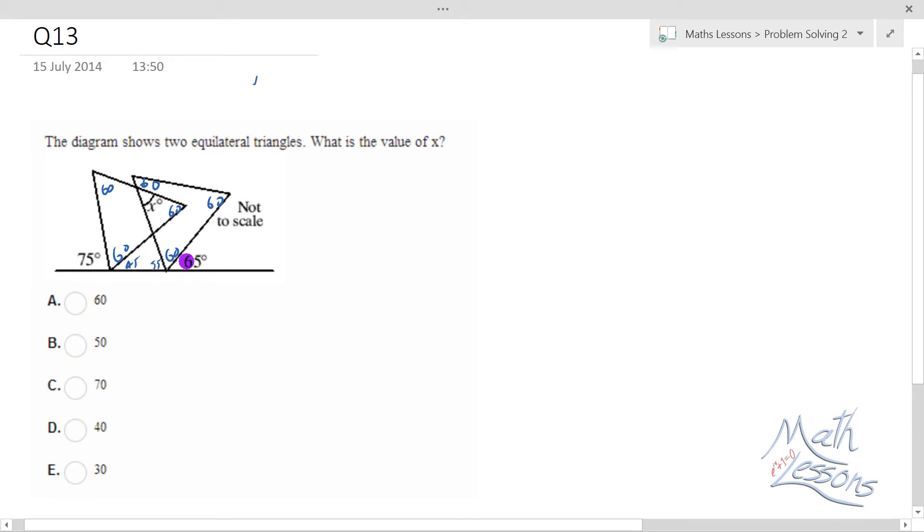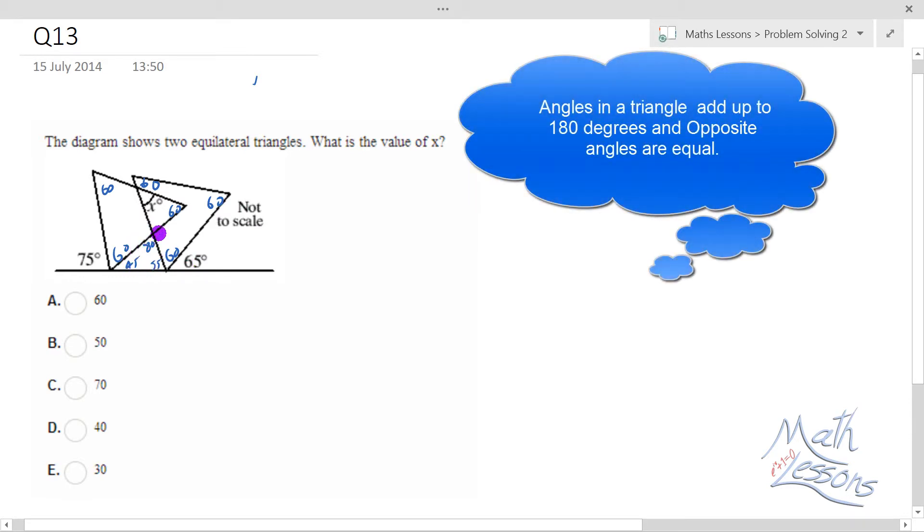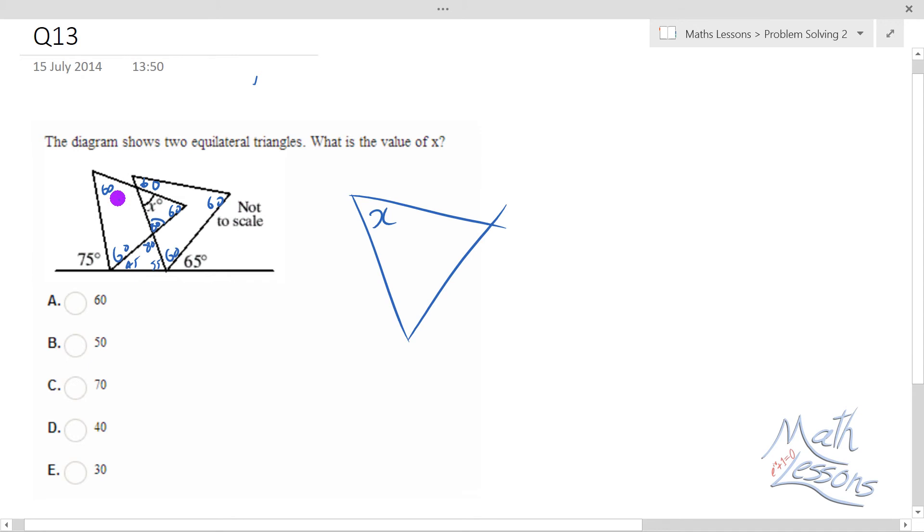Add these two together, we get 100, so this here must be 80 degrees. So what we've got, we've got a triangle here, if I just blow this bit up.